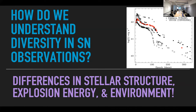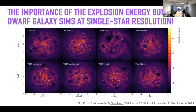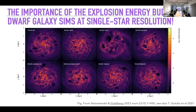The question of how we understand diversity in supernova observations has a hopefully obvious answer: there's diversity in the stars — in stellar structure, explosion energies, and environments surrounding the star. This is also really important to get right for galaxy formation: supernovae provide feedback, they heat the interstellar medium, and for different explosion energies you blow different-size bubbles in your galaxies. Dwarf galaxy simulations are even getting down to single-star precision.